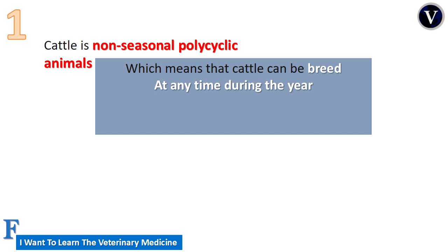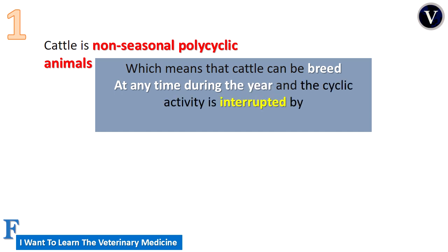Cattle are non-seasonal polycyclic, which means that the cyclic activity is not interrupted. If we compare cattle with other different species, we will find that other species are seasonal monocyclic, meaning the cyclic activity is interrupted either by season, by time, or by a period of the cycle.